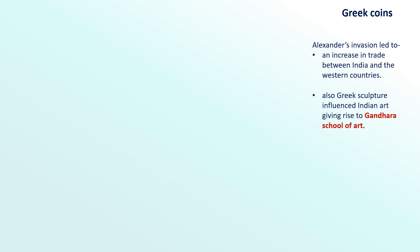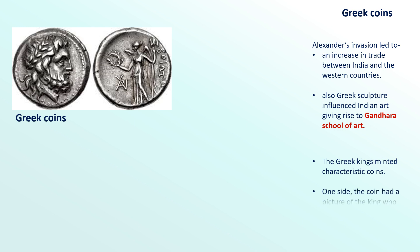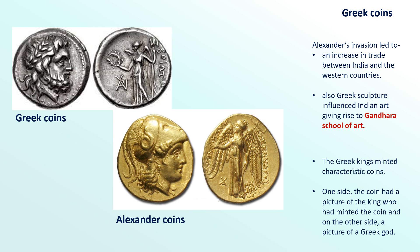Look at your screen, children. You can see the picture of the Greek coins. The Greek kings minted characteristic coins. On one side, the coin had a picture of the king who had minted the coin, and on the other side a picture of a Greek god. The name of the king was also written on the coin. After Alexander, Indian kings also started minting similar coins.